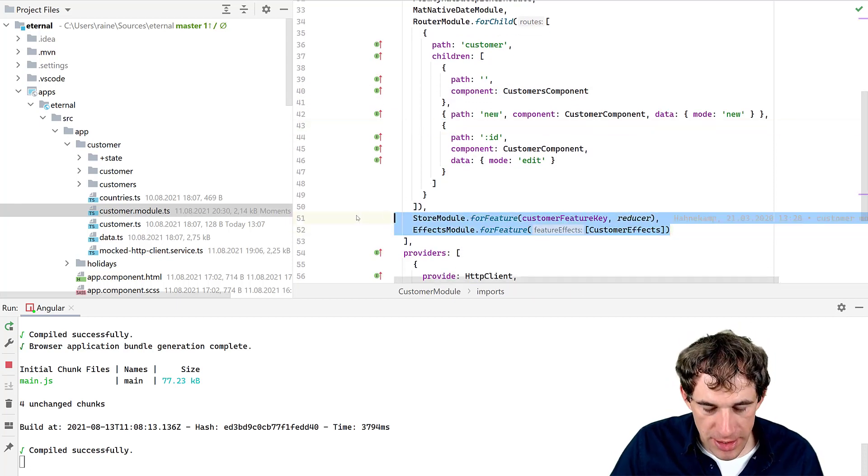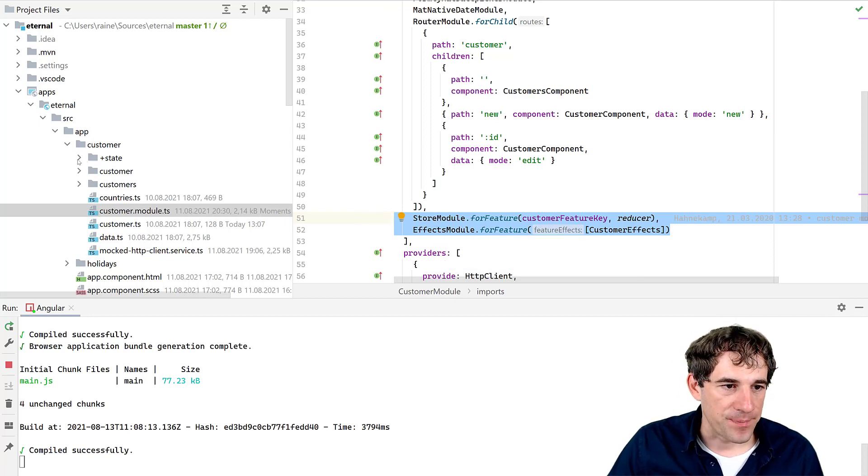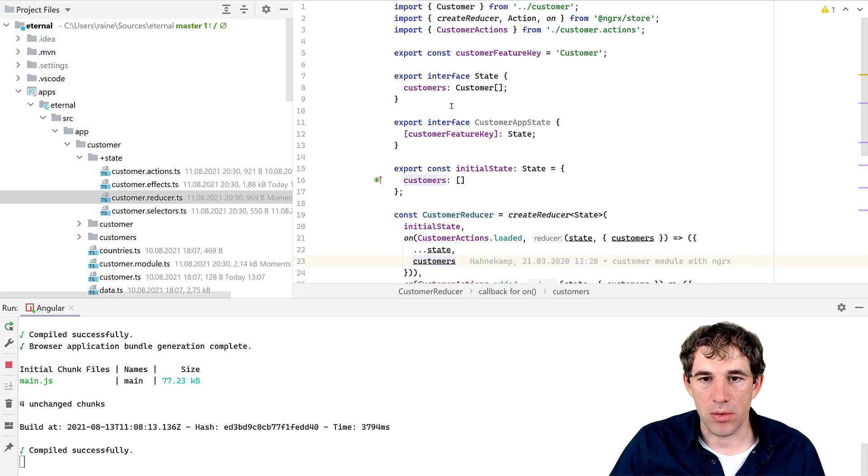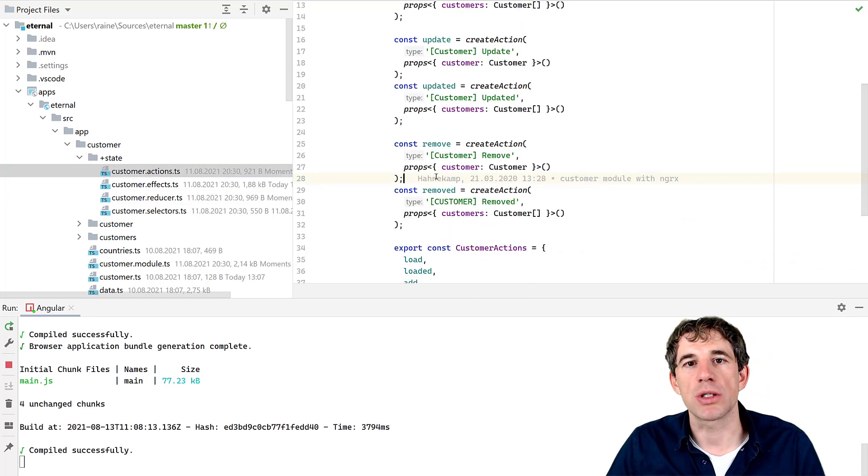State management, of course, otherwise it wouldn't make any sense. We have here the store and the effects module. The various elements are all stored inside of this plus state directory. So we are following the normal conventions. The reducer itself, it contains the state, which is just a list of customer, nothing else.